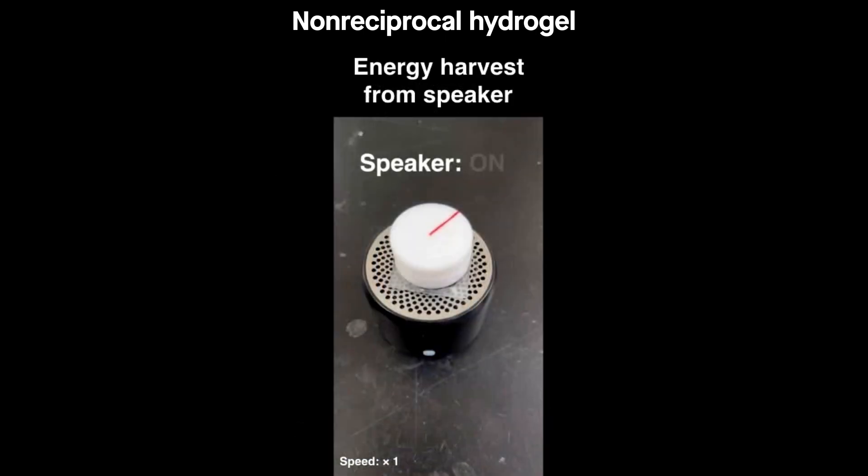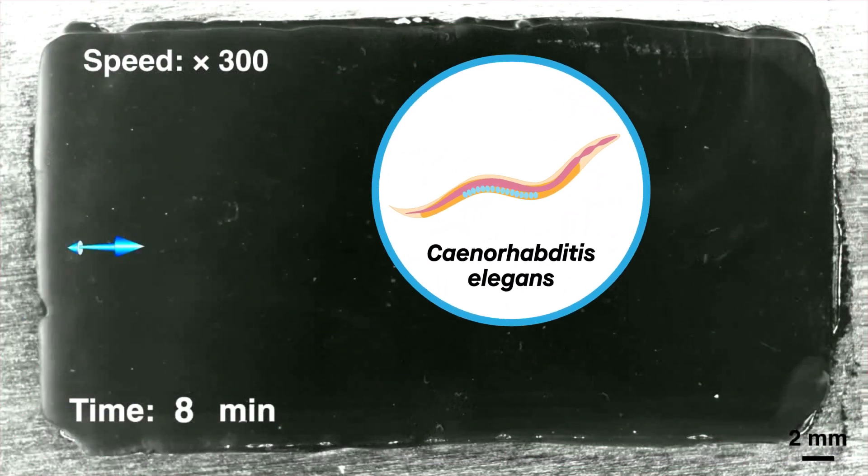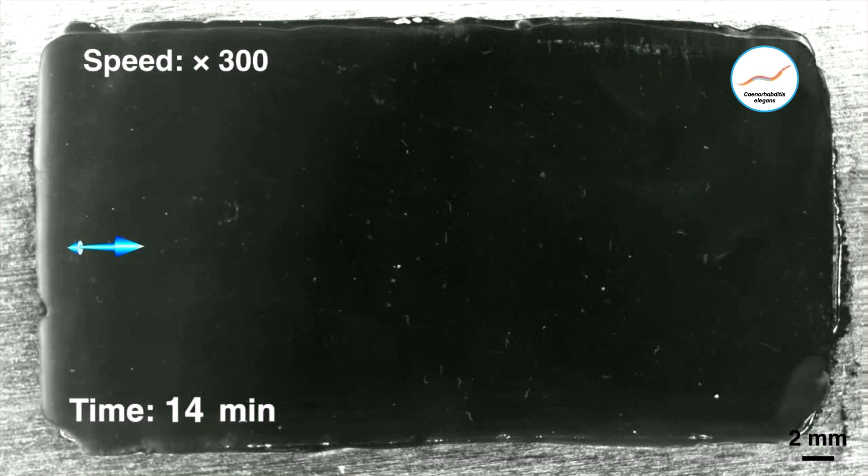This ability to turn random vibrations into useful work could make this non-reciprocal hydrogel a welcome add-on in devices prone to energy loss. Alternatively, those vibrations could come from the beating of tiny creatures, like our worms, providing an elegant method of choreographing their motion.